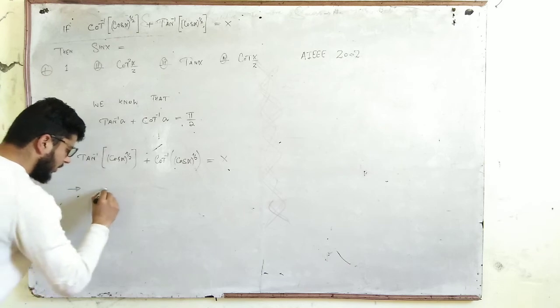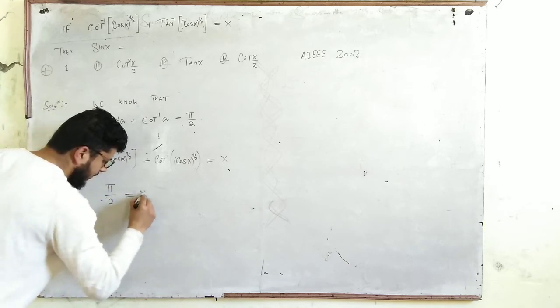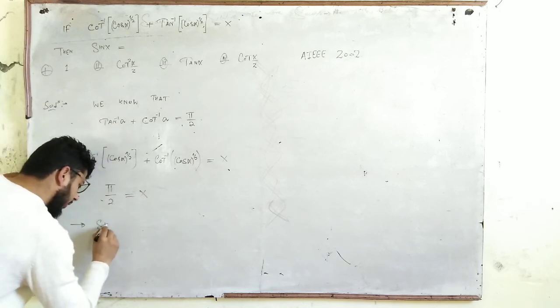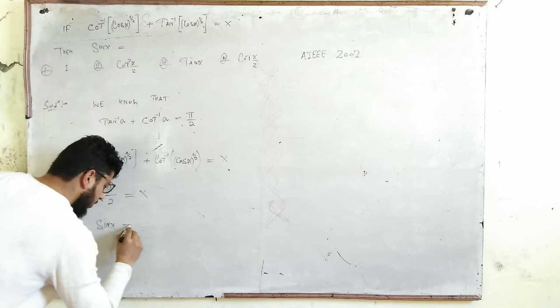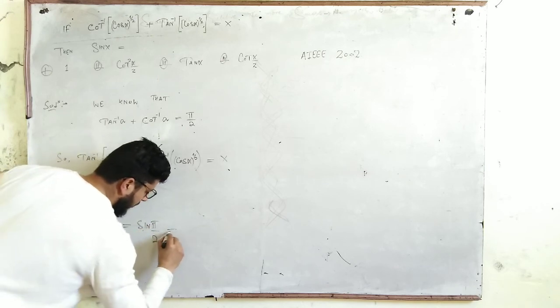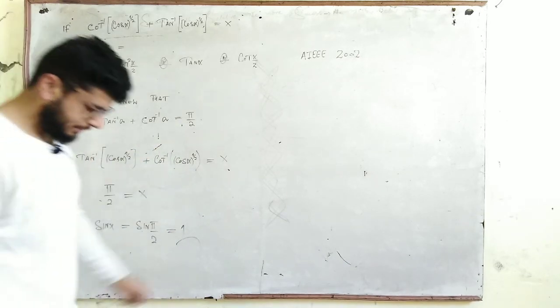We can directly say pi by 2 equals x. Taking sine on both sides, sine of x equals sine of pi by 2, which equals 1. So option number 1 is correct.